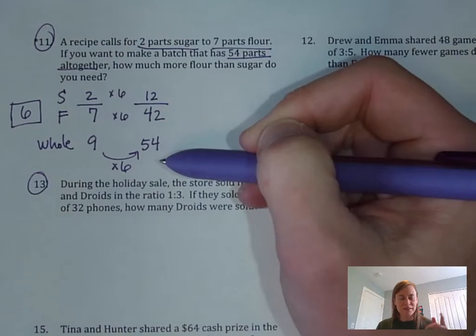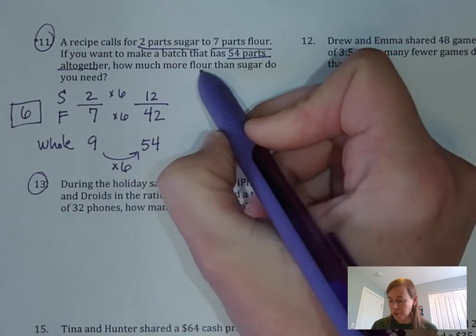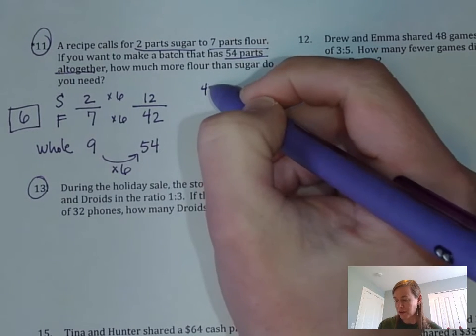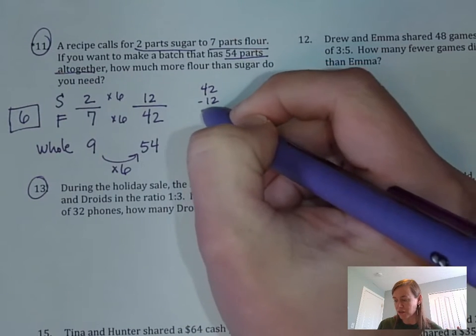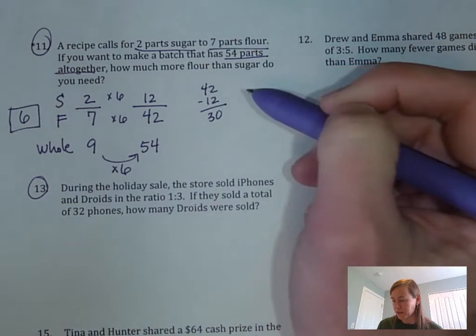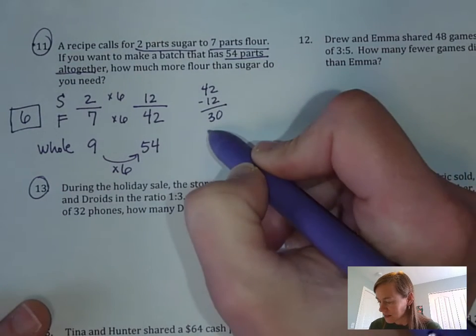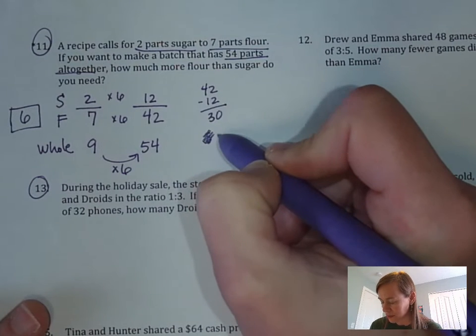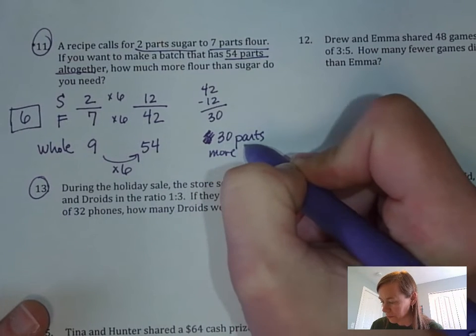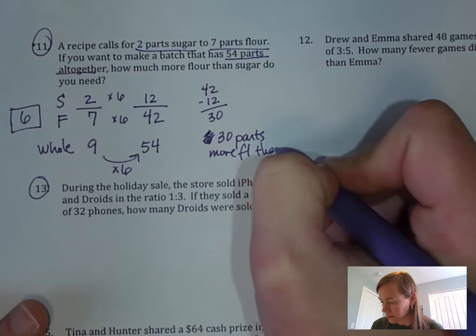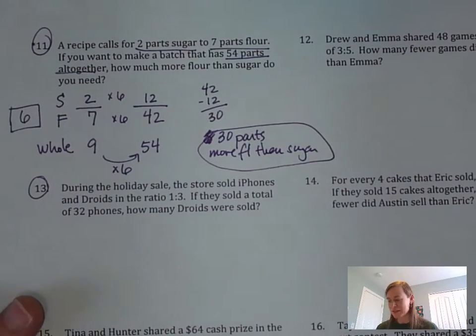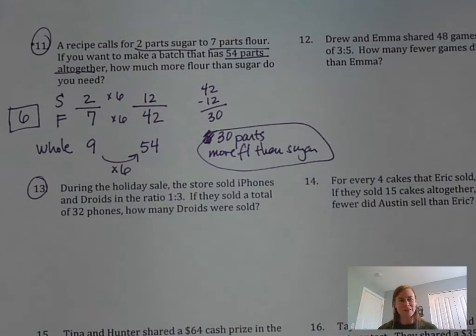Let's reread the question one more time. It says how much more flour than sugar do you need? To figure that out, let's take the flour and subtract the sugar from it. 42 minus 12, you're going to get 30. So the answer is 30 parts more flour than sugar.